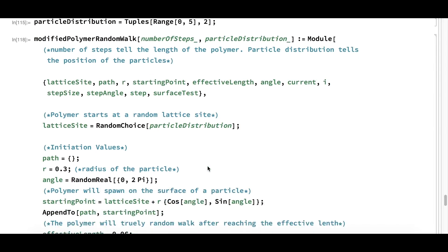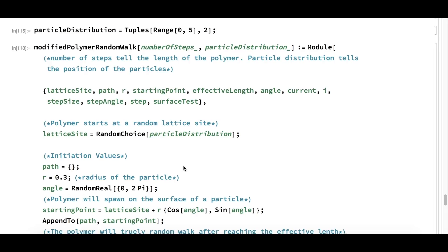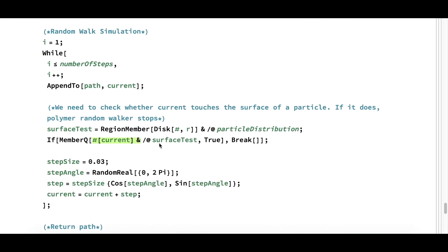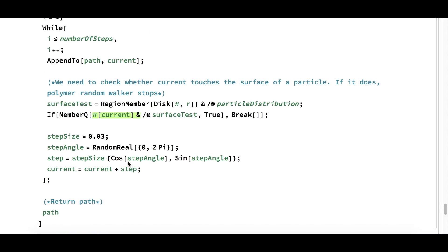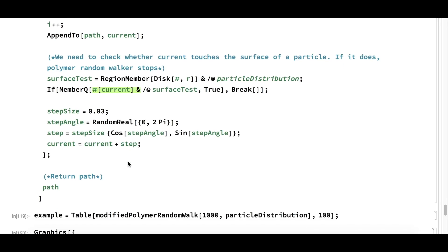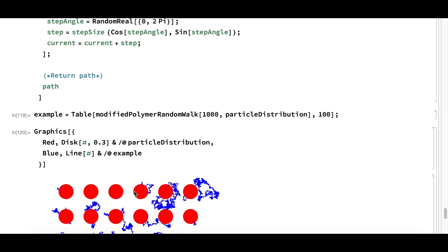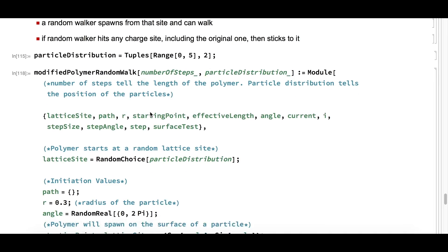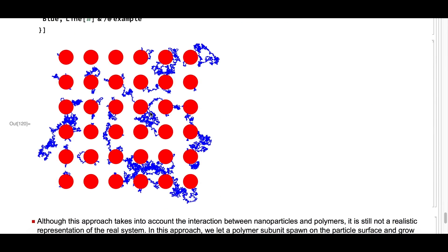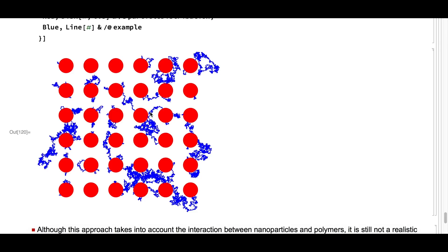The modified PolymerRandomWalk function is very similar to the random walk function above, except it uses RegionMember to test whether a subunit touched a particle. If the subunit touched a particle, the function will stop and return the current path. Here, I generate 100 polymers of 1000 subunits by using this modified polymer random walk function and use graphics to visualize it. As you can see in this picture, the probability that polymers will cross-link nanoparticles decreases because you restricted it to stopping once the polymer hits a nanoparticle.